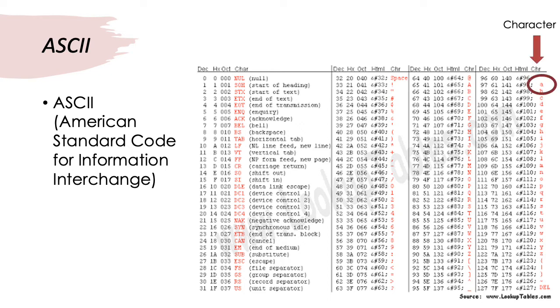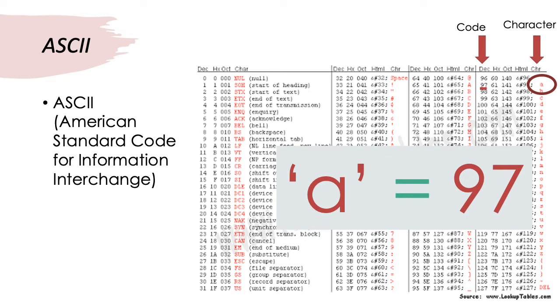If we continue to look at the ASCII table, we'll see that we can find the lowercase a character. And the lowercase a character has the decimal value 97. So, lowercase a in ASCII is given the value 97.